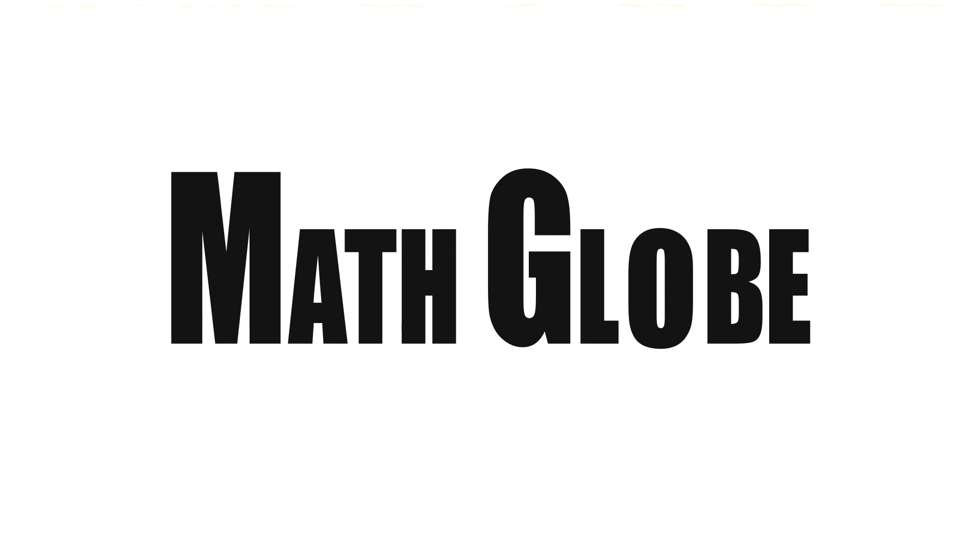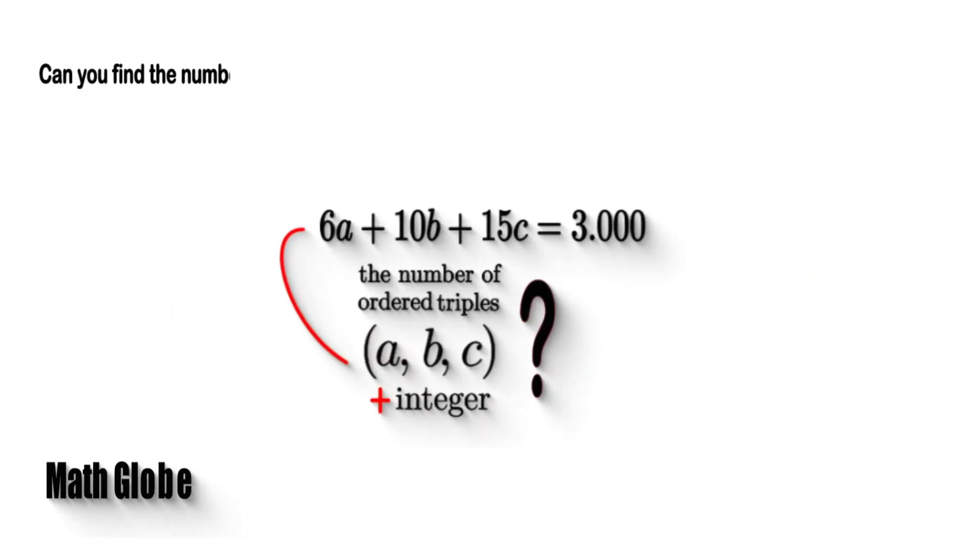Hi, this is Mathglobe. Can you find the number of ordered triples of positive integers A, B, C, such that 6A plus 10B plus 15C equals 3000?